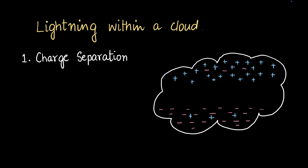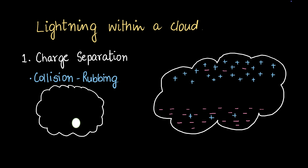You might be wondering why charge separation occurs. It occurs due to collisions between particles, which is like rubbing of particles. Let's say you have a cloud and a water vapor particle somewhere there, and another water vapor particle is moving upward toward the cloud. At some point they collide, rub against each other, and one turns positive and one turns negative.